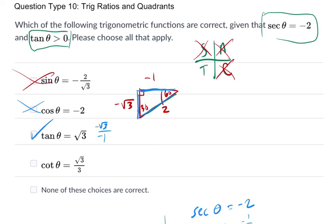Check. And the cotangent is the reciprocal of that. So it would be negative 1 over negative square root of 3. But we want to rationalize that top and bottom by radical 3. The negatives cancel out and we get radical 3 over 3.